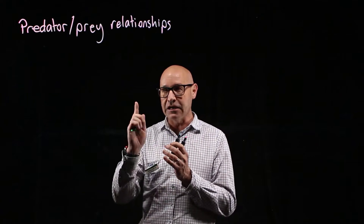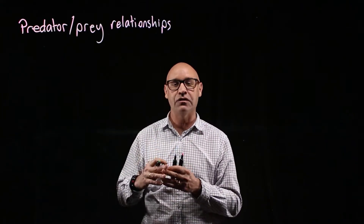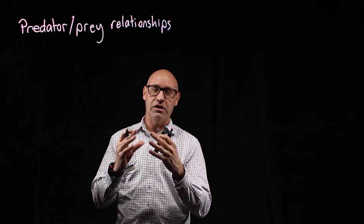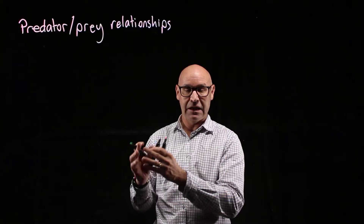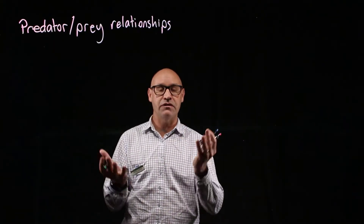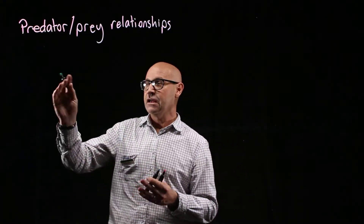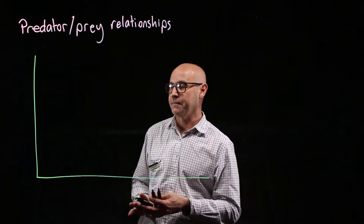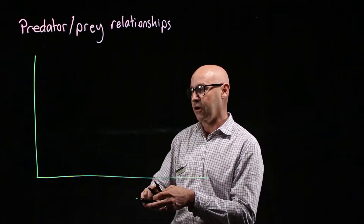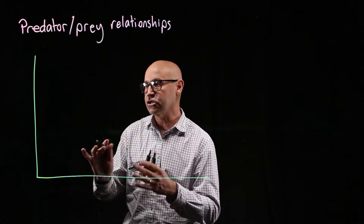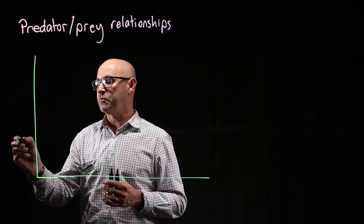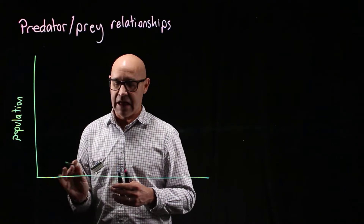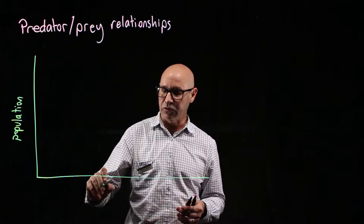We're not interested in individual predators and prey; we're interested in the population of a species — the number of organisms of a particular species in any area — and how those populations are dependent on each other. I'm going to show you how to do that in a population graph, a predator-prey graph. On our y-axis we're going to look at the population, the number of organisms, and on the x-axis we're looking at time.